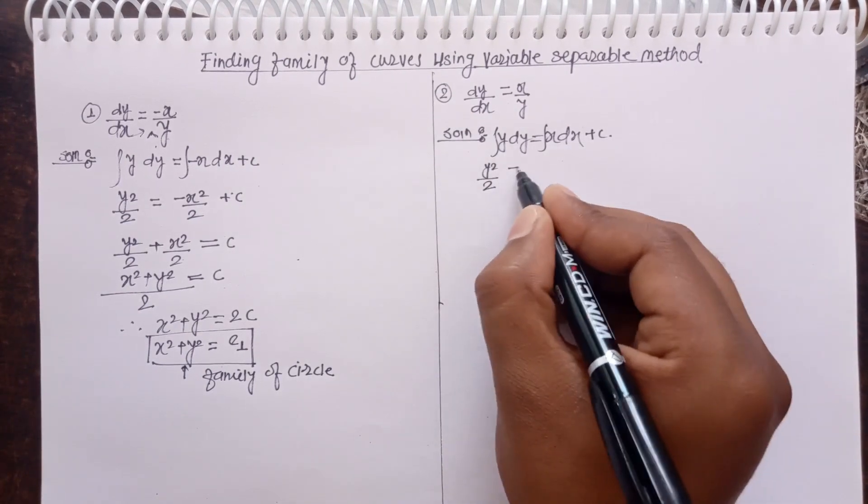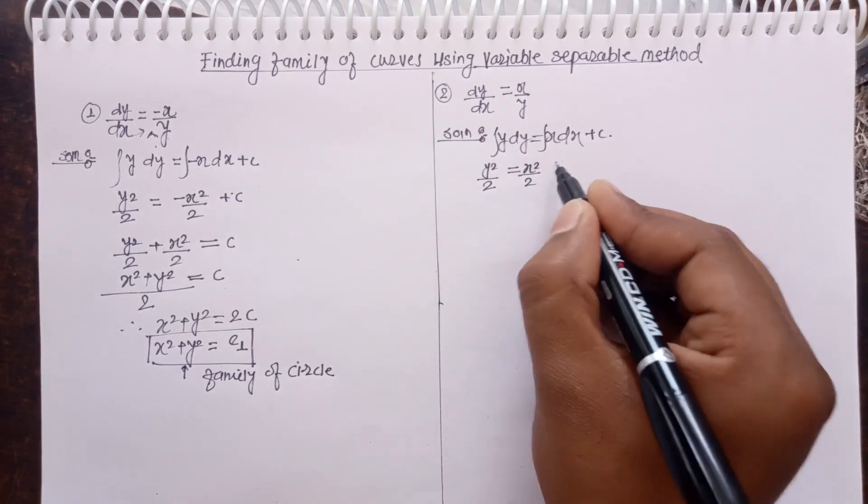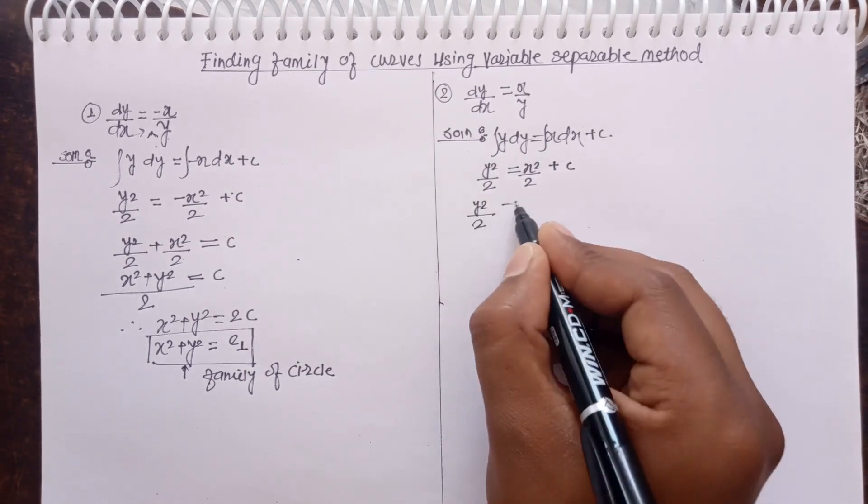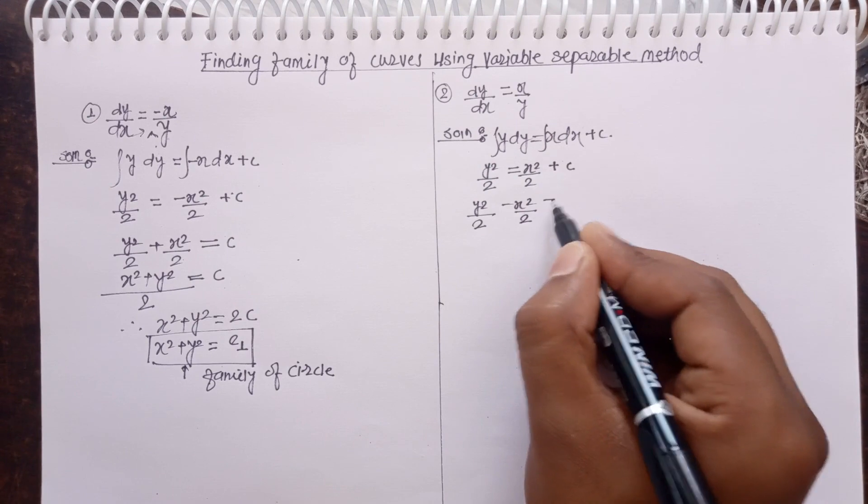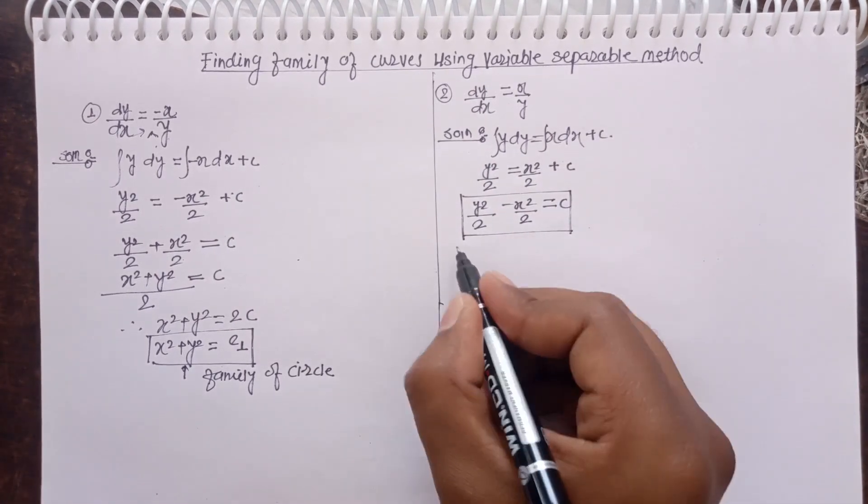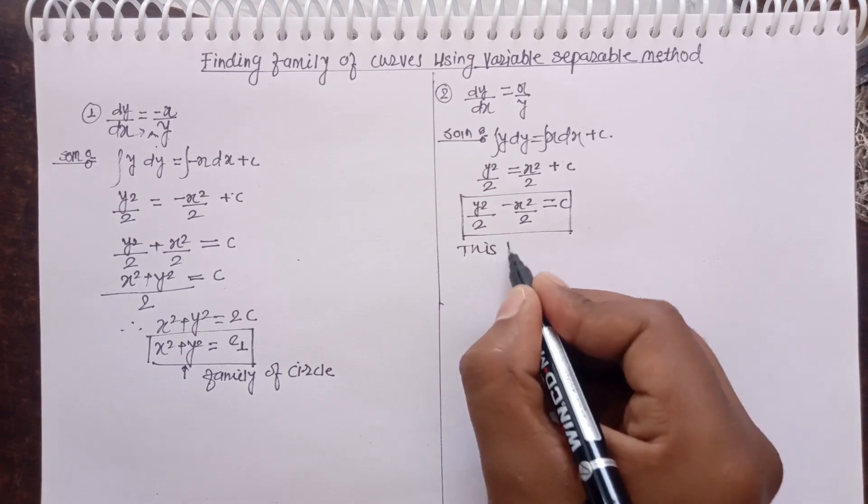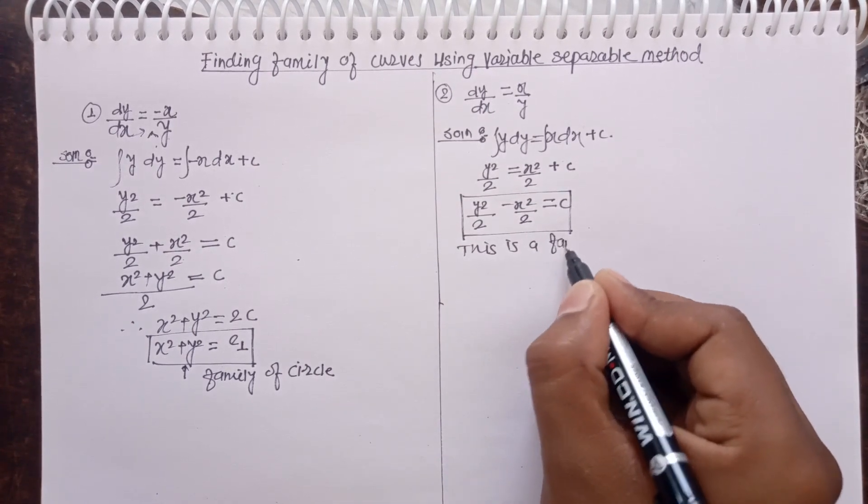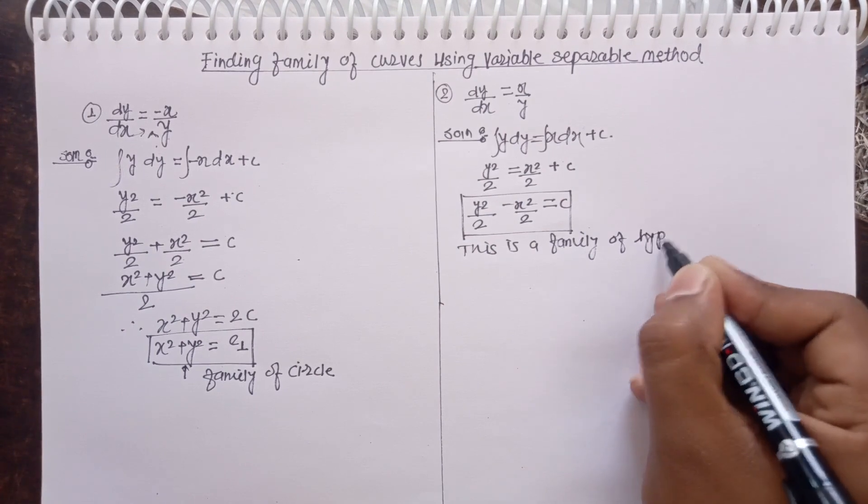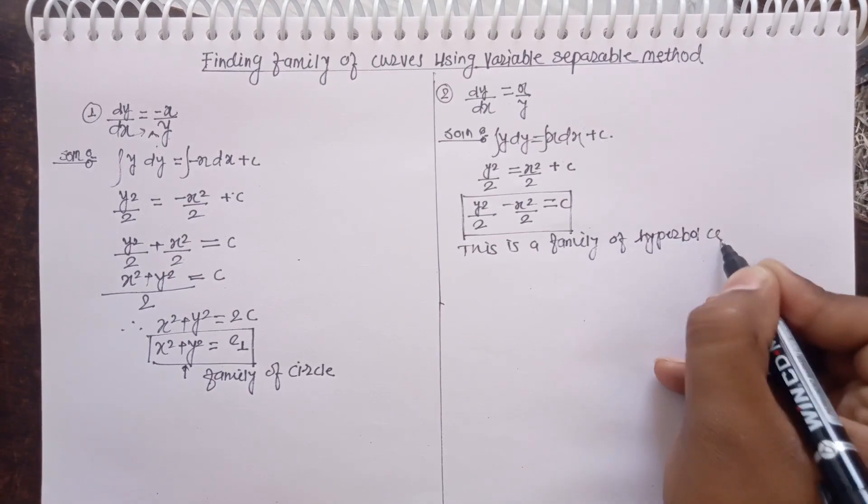Now we have to take the integrations on both sides. Y square by 2. This is the integration x square by 2 plus c. Y square by 2 minus x square by 2 equals to c. This is the solution. And see, this is a family of hyperbola.